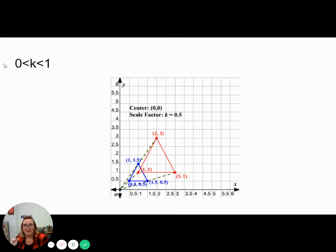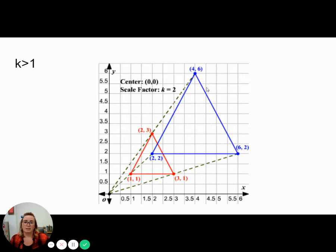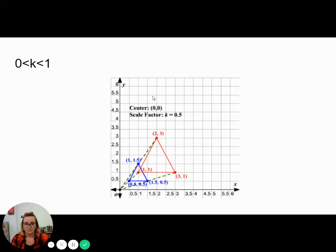Here's an example of a K that's between zero and one or a fraction. This is a half. Notice the red triangle is still our pre-image, and our reduced triangle, because it's smaller between zero and one, our reduced triangle is now in blue and it is smaller. So an enlargement gets bigger based on K being greater than one. A reduction gets smaller based on K being a fraction or between zero and one.